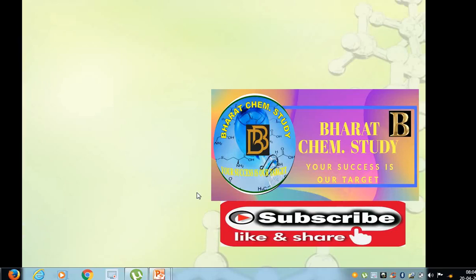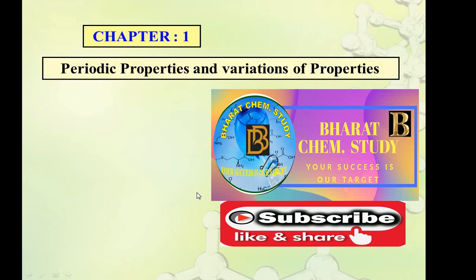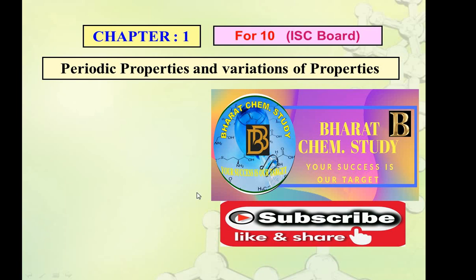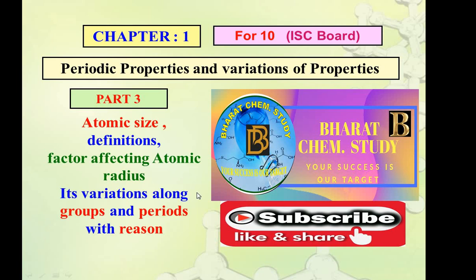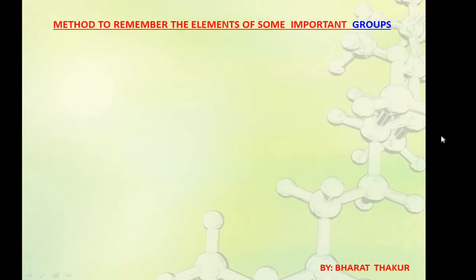Hello students, welcome to my YouTube channel Bharath Chem Study. Today in this video we are going to study about chapter 1, that is periodic property and variation of properties for 10th standard of ICSE board. In this video, part 3, we are going to study topics of atomic size, definition, factors affecting atomic radius, and its variation along groups and periods with reasons. But before we start with the topic we must remember the elements of some important groups and periods.